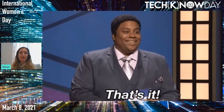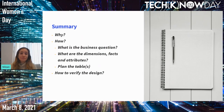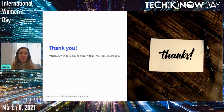To summarize: we've learned why we need to create a good design — to make sure the following stages, the ETL and the front-end, will give users what they need. How to do that using three stages: first, identify the business question; second, identify the dimensions, facts, and attributes; and third, plan the tables using a star schema. Finally, we verify the design by querying the dataset we created. Thank you very much for listening. This is my LinkedIn profile — I'll be happy to answer any questions. Thanks again.